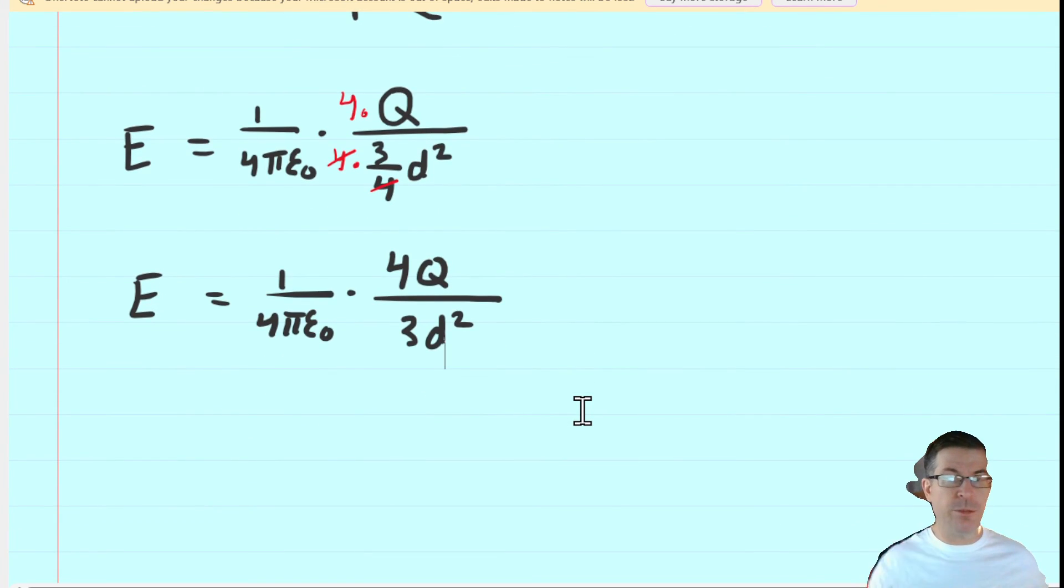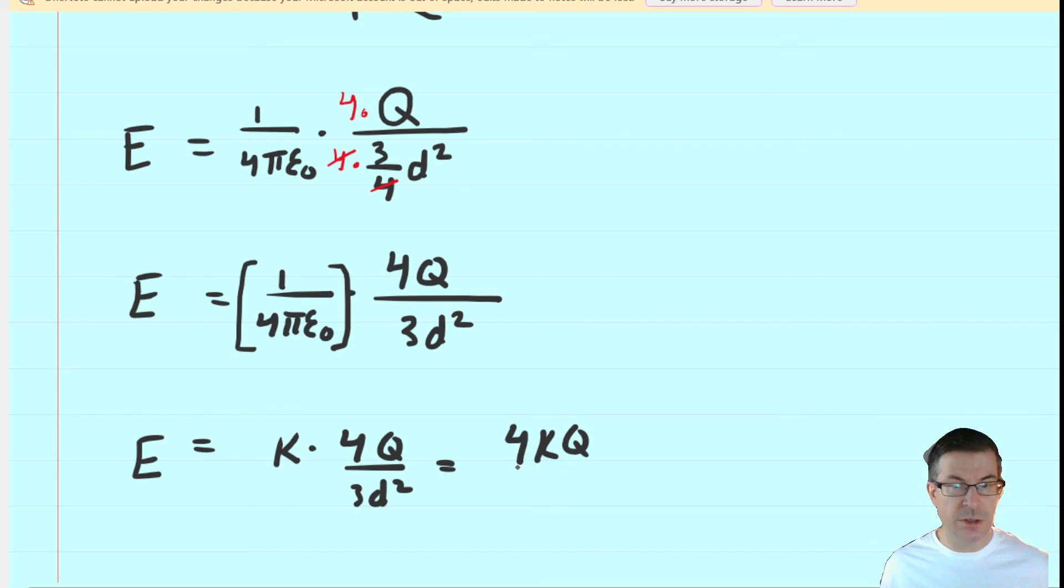And there we have it. That would be the correct answer. Perfectly acceptable. Some of you might notice that that term could also be rewritten as K. A lot of textbooks prefer to use K there. So you could do that as well. You could just call this K times 4Q over 3d². And if you did that, you can even write it as 4K times Q over 3d². So there's a few different variations of the answer. Any one of these three variations would be acceptable.